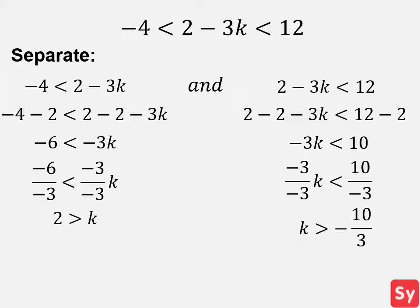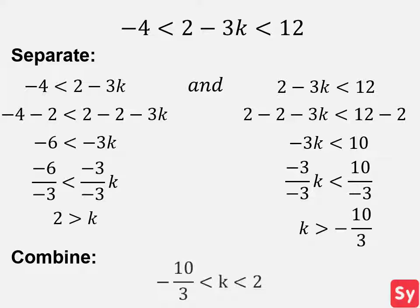Finally, we combine the ranges. We get 2 is greater than K, which is greater than negative 10 over 3, which is our answer.